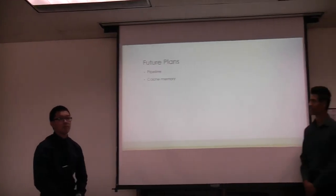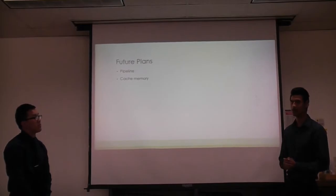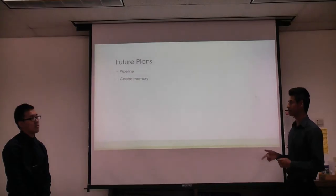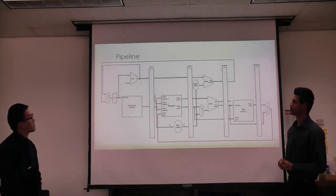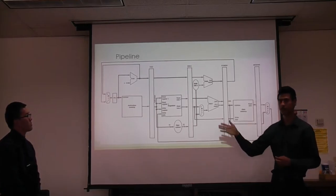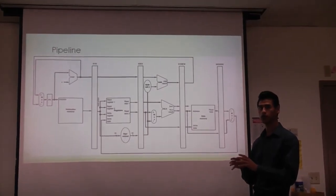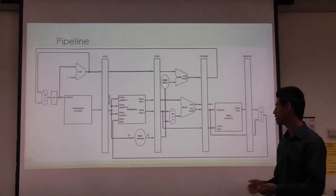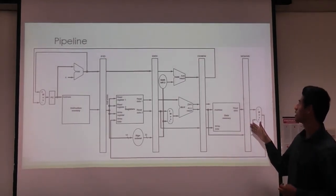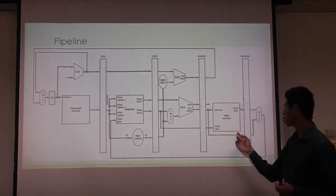Our future plans include implementing cache and pipeline — and we actually implemented both of them. The main idea behind pipelining is splitting the processor into different stages, with each stage performing work toward completing an instruction. Our pipeline has five stages: fetch, decode, execute, memory, and write-back.